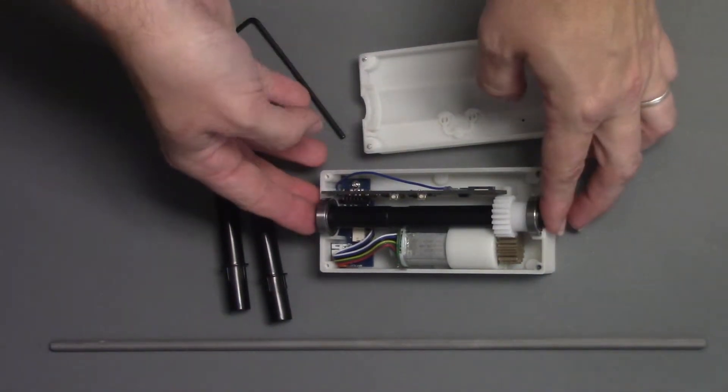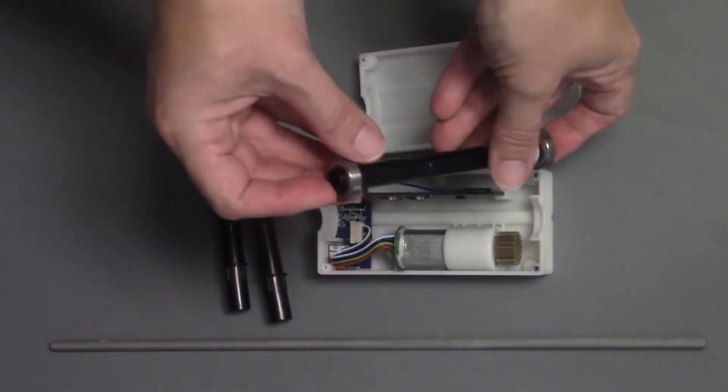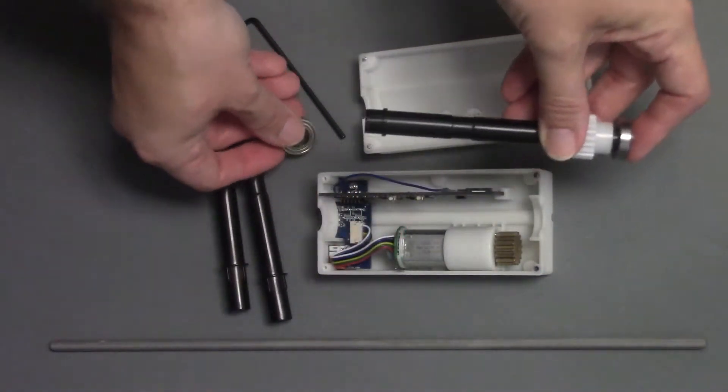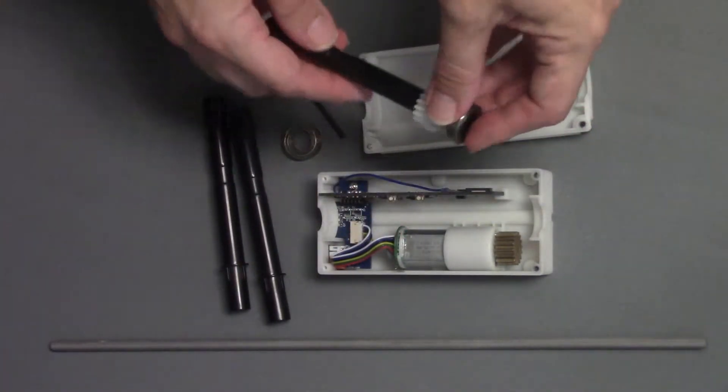Remove the existing tilt shaft. Remove both bearings. Remove the shaft gear by sliding it off of the shaft.